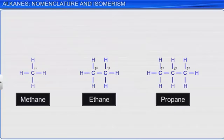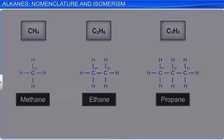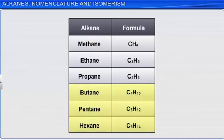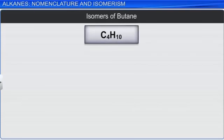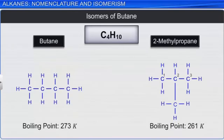The first three alkanes in the series — methane, ethane, and propane — only have one molecular structure. However, as the number of carbon atoms in an alkane increases, we get more than one structural arrangement for a particular molecular formula. Such compounds are called isomers, and the phenomenon of exhibiting isomers is called isomerism. For example, in butane, we get two possible structures: one as a continuous chain, and the other branched. Although the chemical formula for all these structures is the same, their properties differ due to differences in their carbon chain structure. Such compounds are called chain isomers.